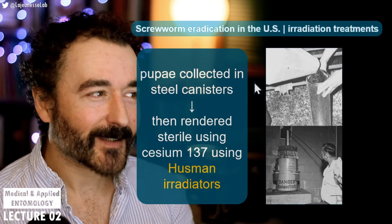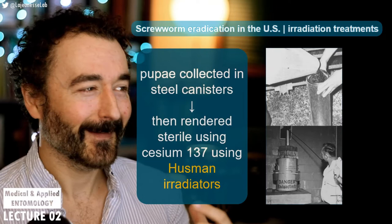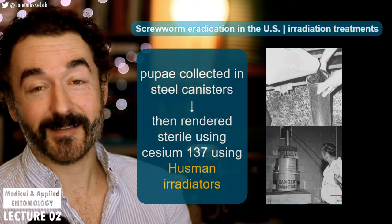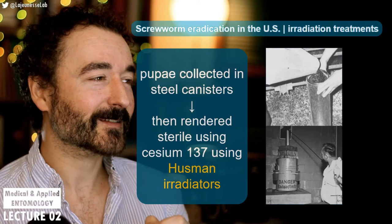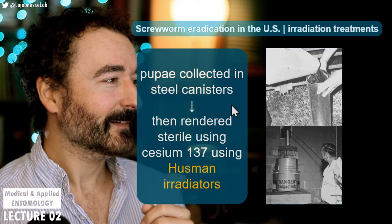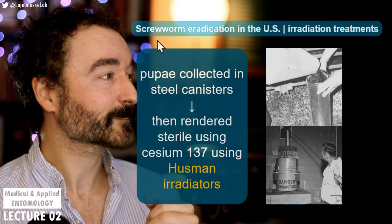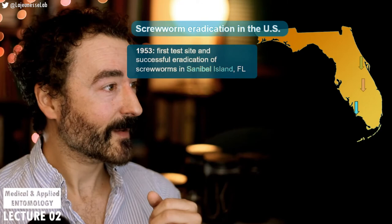To sterilize the pupae, they use Husman canisters — or Husman irradiators. You fill up a jar with fly pupae and sit them in this irradiator for a few minutes, which destroys their chromosomes and makes the sperm totally infertile. Apparently these canisters are still around — I think there's a museum somewhere in Florida where you could see some of these tools that were used about 70 years ago.